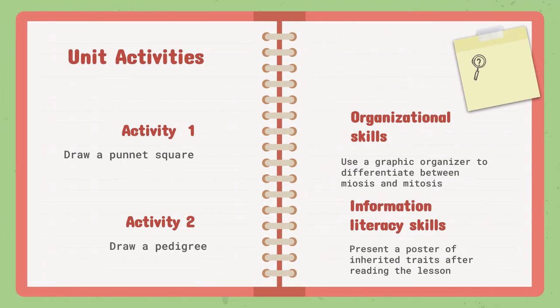As for the unit activities: Activity 1 is drawing a Punnett square — we will practice drawing Punnett squares to see inherited traits. Activity 2 is drawing a pedigree. We can draw three to four generations and discuss the different diseases that can be inherited from a parent, sibling, or different offspring. There are rules to follow for both drawing a pedigree and drawing a Punnett square.